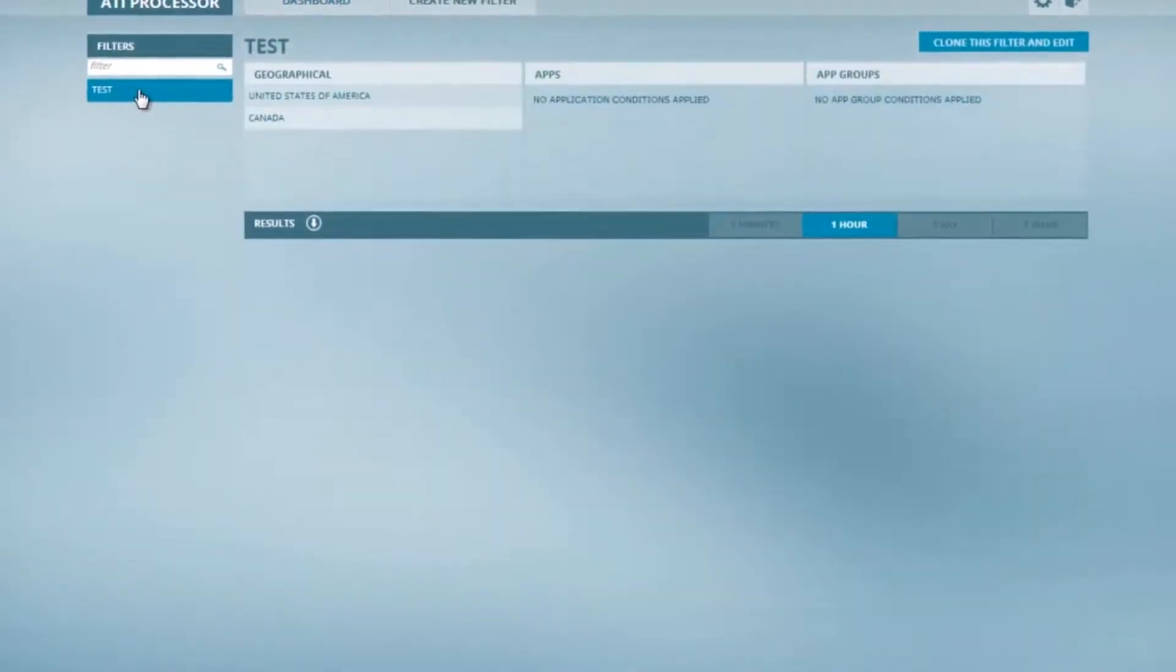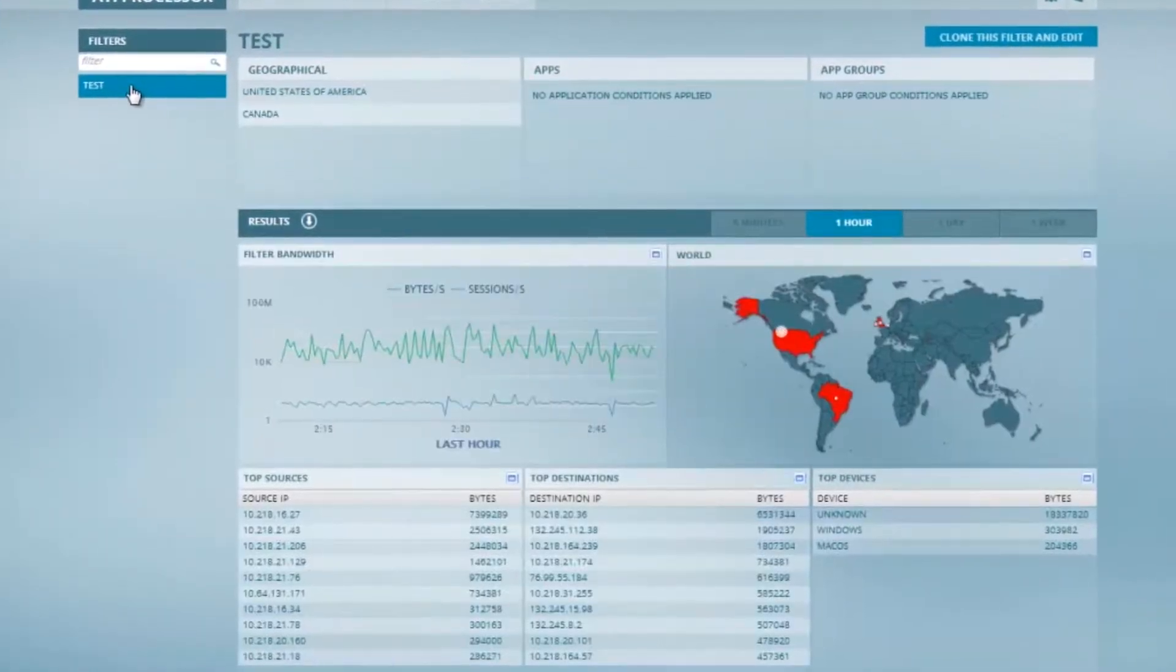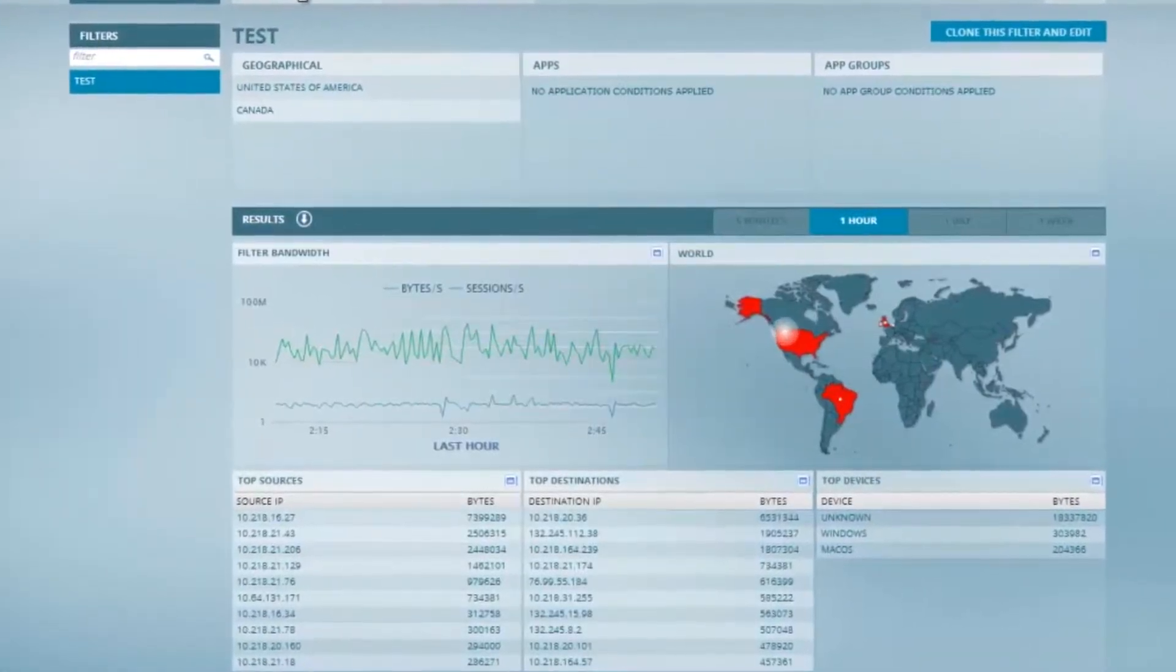For example, only taking error packets and sending them to those tools, or only taking applications that are having errors and sending those to a tool. So we're able to dramatically reduce the number of bytes and packets that a tool has to look at.